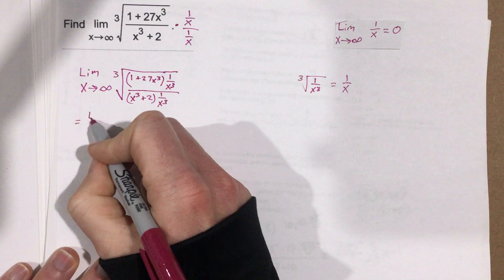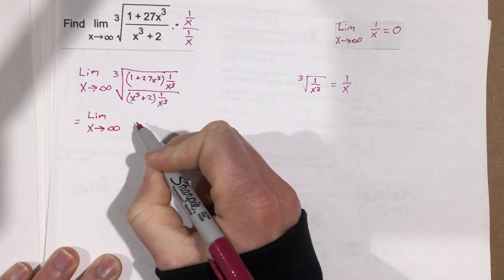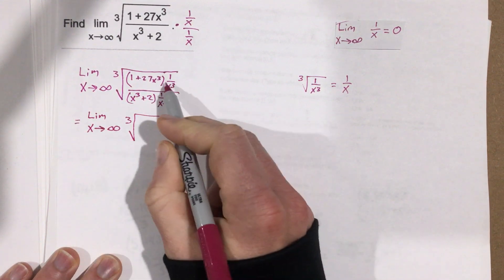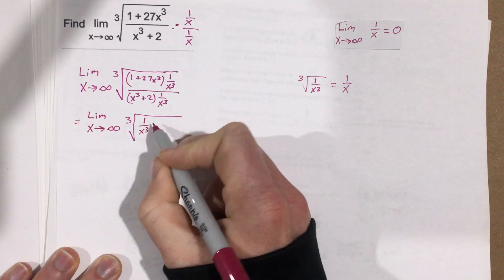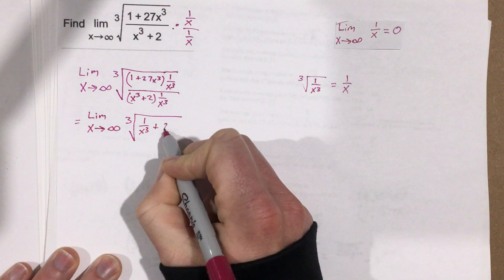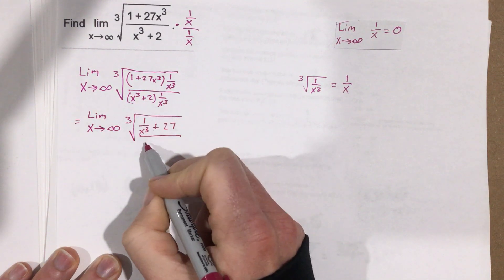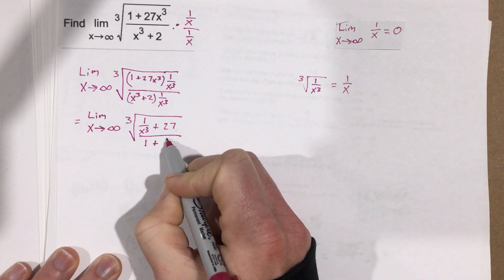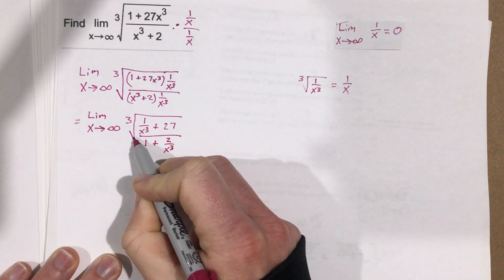So we get: limit as x approaches infinity of the cube root of — when we multiply through, that's going to be (1 over x cubed) plus 27, over — and when we multiply 1 over x cubed through the denominator, we get 1 plus 2 over x cubed. Keep in mind this is all inside the radical.